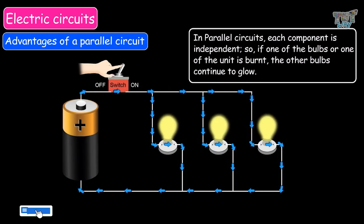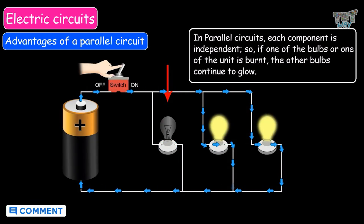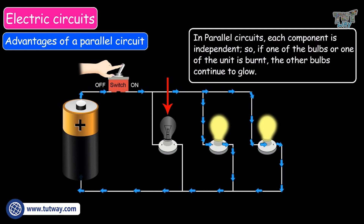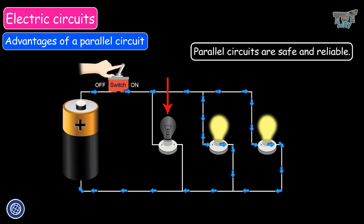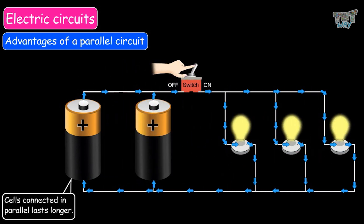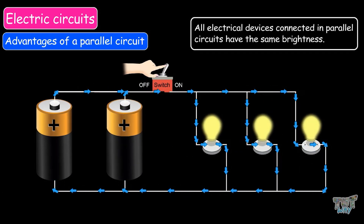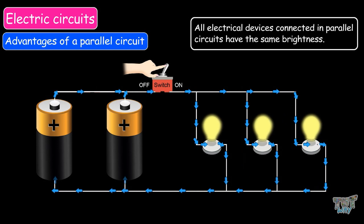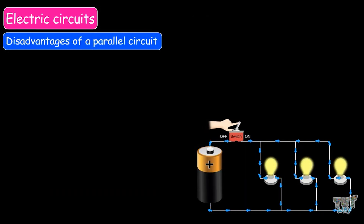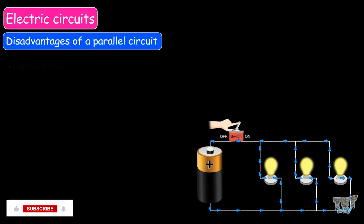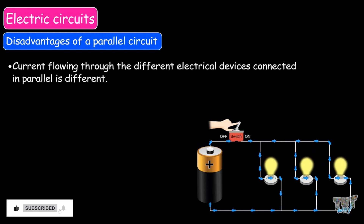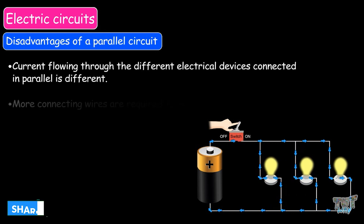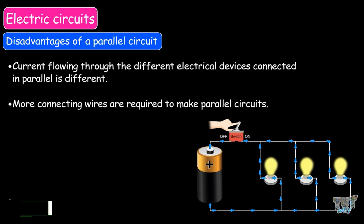Now let's learn some advantages and disadvantages of parallel circuits. In parallel circuits, each component is independent, so if one of the bulbs burns out, the other bulbs will continue to glow. Parallel circuits are safe and reliable. Cells connected in parallel last longer. All electrical devices connected in parallel circuits have the same brightness. As for disadvantages, the current flowing through different electrical appliances connected in parallel is different, and more connecting wires are required to make parallel circuits.